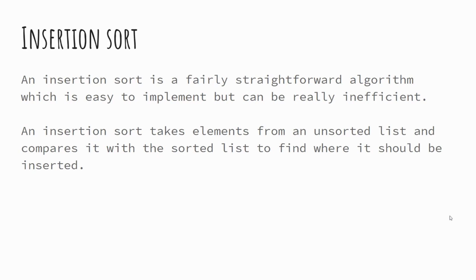An insertion sort works by taking elements from an unsorted list and placing them into a sorted list. When placing an element, it compares with the items already in the sorted list to find out where it should be inserted. I'll show you this in an example, which will make it clearer.